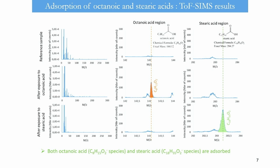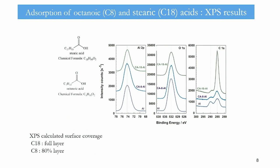We studied carboxylic acids, and with ToF-SIMS we could evidence that the molecules are present fully at the surface. For example, octanoic acid and stearic acid show clear adsorption compared to a reference sample. With XPS, we confirmed adsorption and performed quantitative treatment of the intensity. We found that stearic acid (C18) produces a full monolayer on the surface, whereas for C8 the surface was not fully covered.